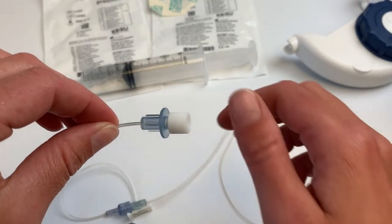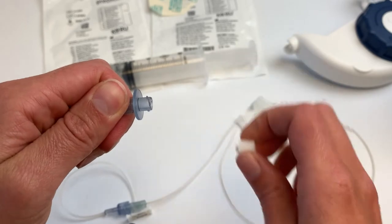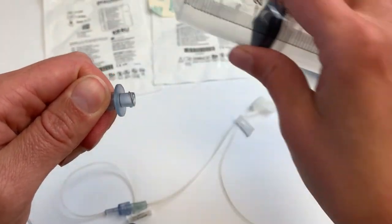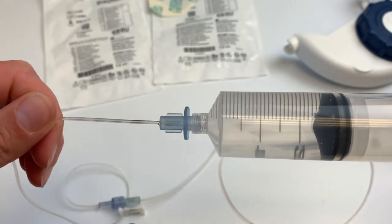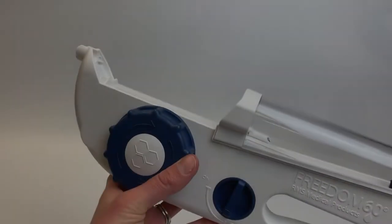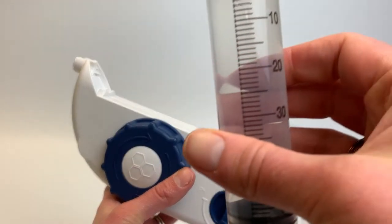Then, remove the sterile cap from the lower disc end of the precision tubing set and connect to the medication syringe. For patient safety, the lower disc ensures that the syringe and its tubing stay securely in place within the syringe driver.